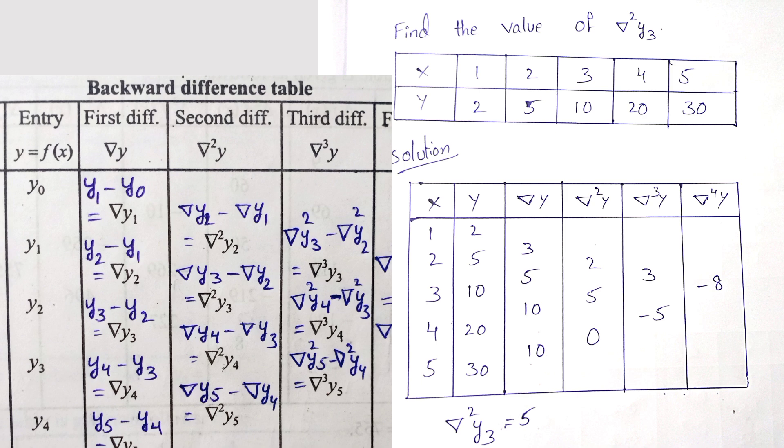Y1 minus y0. Y1 is 5, y0 is 2, so 5 minus 2 equal to 3. Next nabla y2, y2 minus y1. Y2 is 10, y1 is 5, so 10 minus 5 equals 5. Next nabla y3 value, 20 minus 10, the value is 10. Next nabla y4 value, 30 minus 20 is 10.